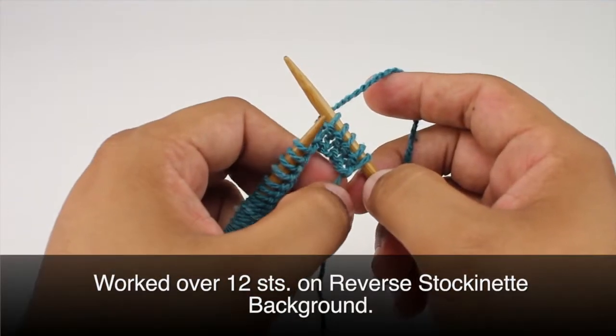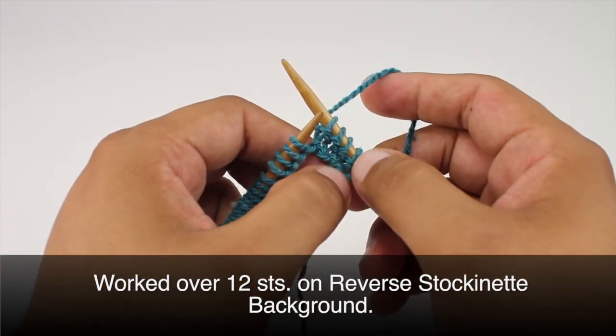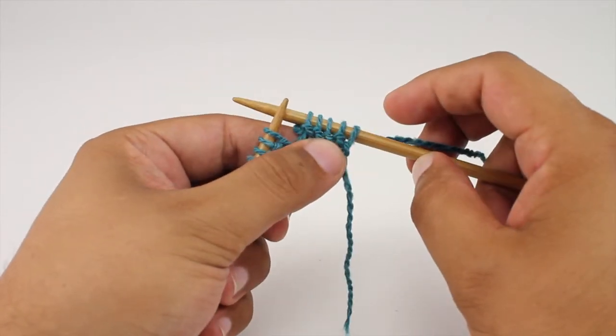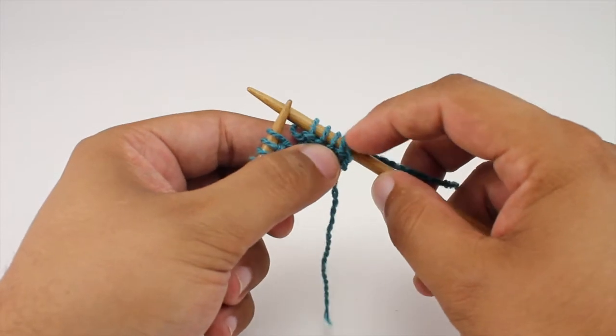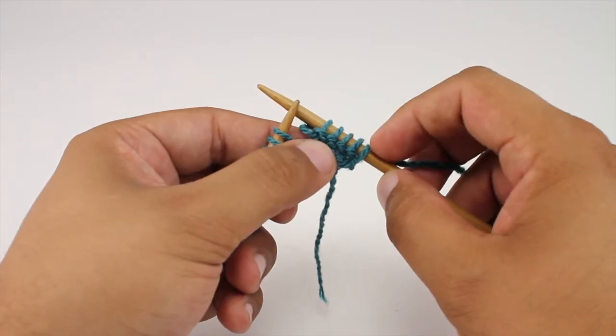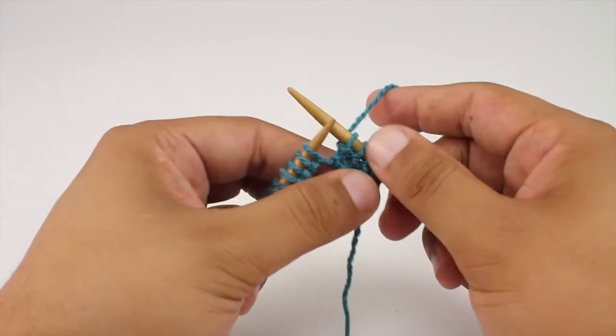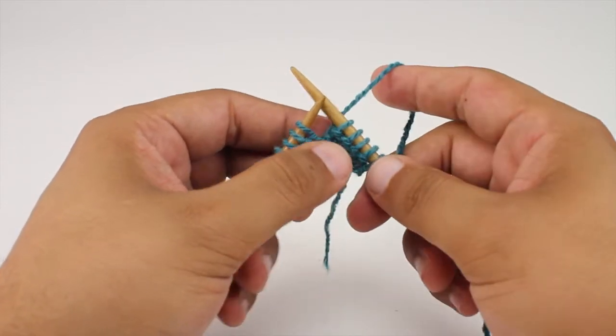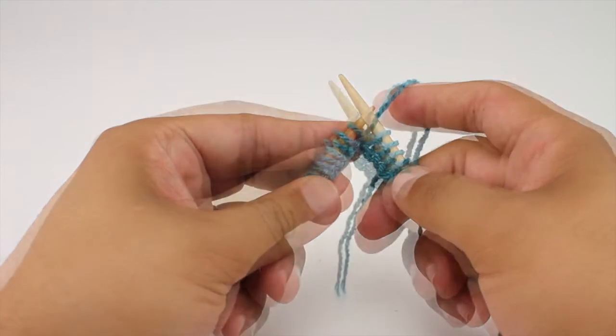This cable stitch is worked over a panel of 12 stitches on a background of reverse stockinette. Now since this cable panel is worked on reverse stockinette, we're not going to include the border of reverse stockinette in this pattern. If you don't know how to do reverse stockinette, you can check out the video on our website.